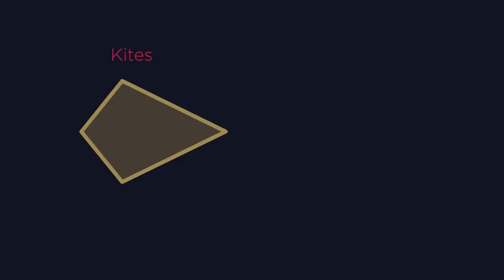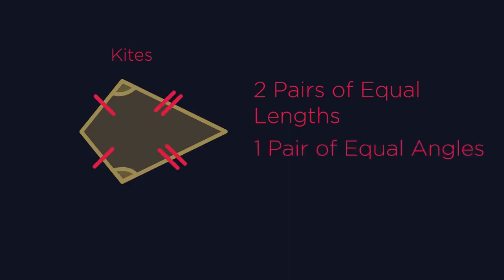Last up, we have kites. What do you notice about our final type of quadrilaterals? Pause the video and have a think. They have two pairs of sides that are equal in length. They always have one pair of equal angles. And they're not so important, but worth mentioning, the diagonals cross at 90 degrees.